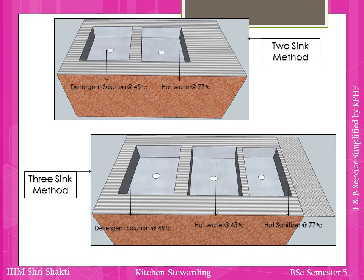Ultimately, any of these manual methods has its own limitations — they are only effective for a limited number of cycles, meaning only until the water temperature is maintained at the required levels. These are the two manual methods used for dishwashing.